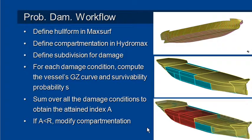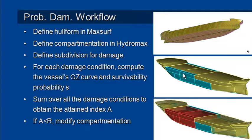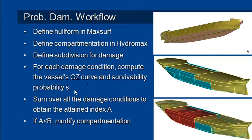The workflow in MaxSurf for carrying out probabilistic damage stability is that we first define the hull form in MaxSurf as usual, and we define the compartmentation in Hydromax as usual — the location of our tanks and compartments. We then set up some subdivision within the vessel; that subdivision defines a number of zones and we damage each zone in turn. For each damage condition we carry out a large angle stability, compute the vessel's GZ curve, and from the properties of that GZ curve we calculate the probability of survival S. We sum those together; it's done in Hydromax Ultimate.